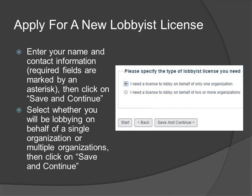Enter your name and contact information. Please note that the required fields are marked by an asterisk. Then click on Save and Continue. On the next screen, select whether you will be lobbying on behalf of one or multiple organizations. We will cover how to amend your license from a single organization to multiple organizations later in this webinar. Click on Save and Continue to proceed.